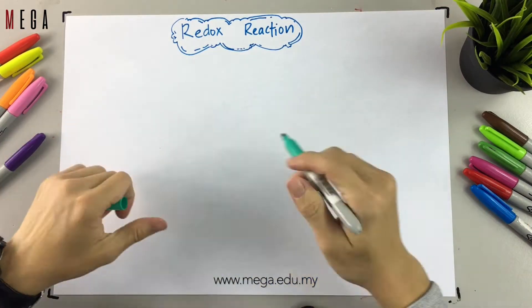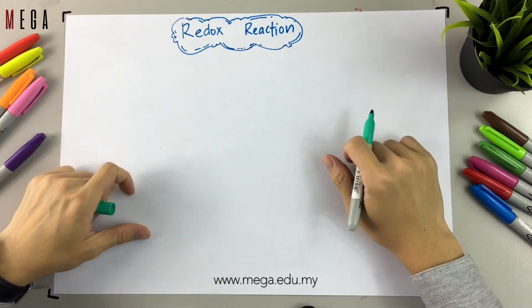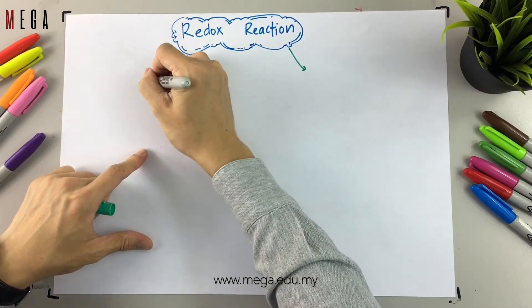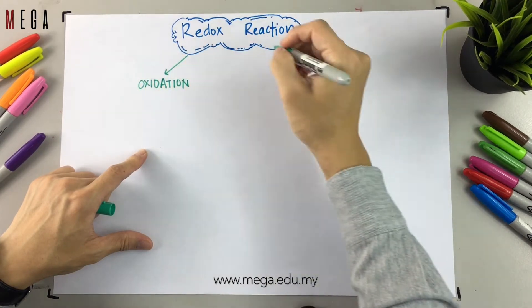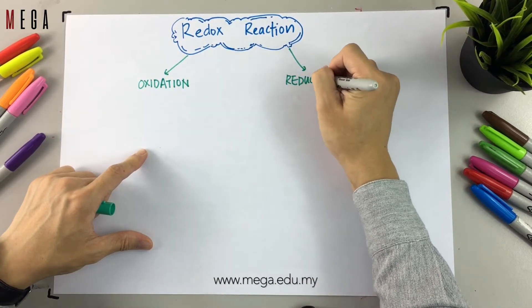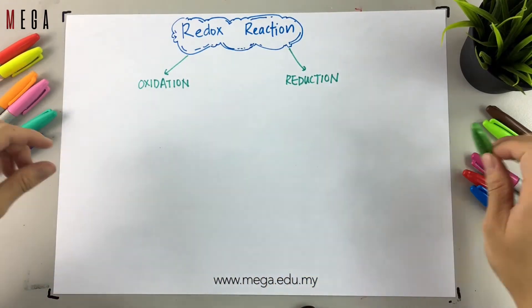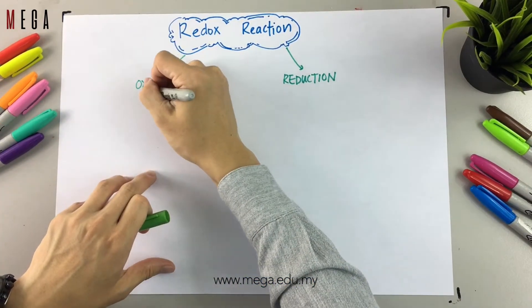Today we're going to talk about redox reaction. So first, what is the definition of redox reaction? Redox reaction means oxidation and reduction happen simultaneously, which means both of these reactions happen at the same time in a reaction.